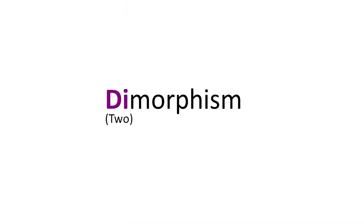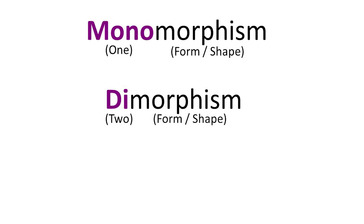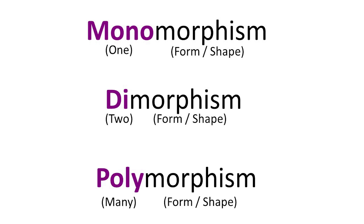The term dimorphism can be broken down into two parts – "di," meaning two, and "morphism," meaning forms or shape. Similarly, monomorphic fungi have only one life form, whether it's the yeast or filamentous mold form.